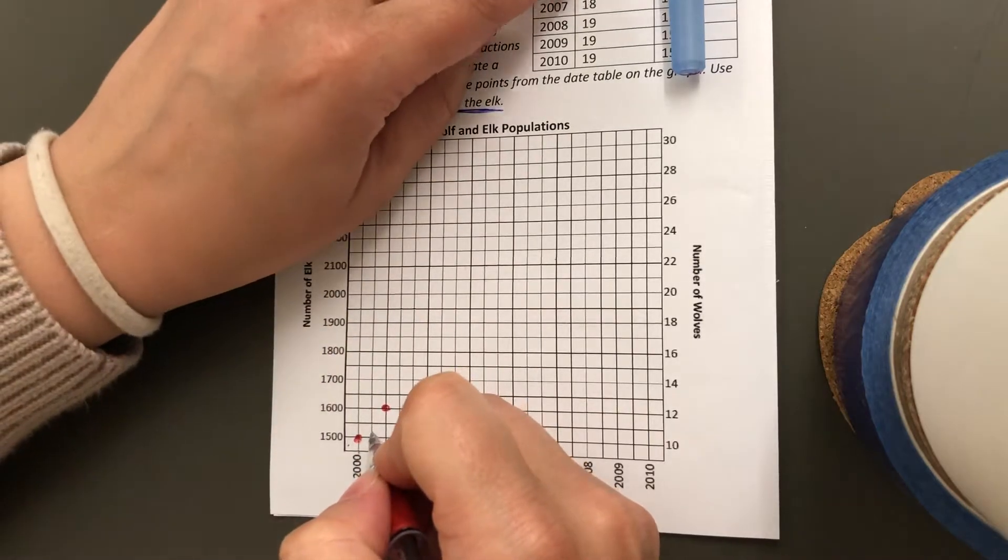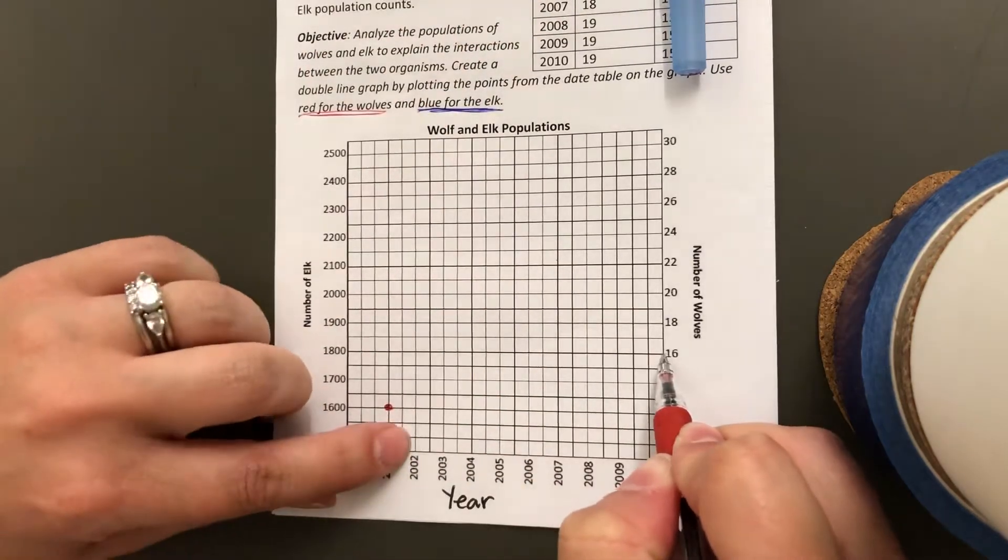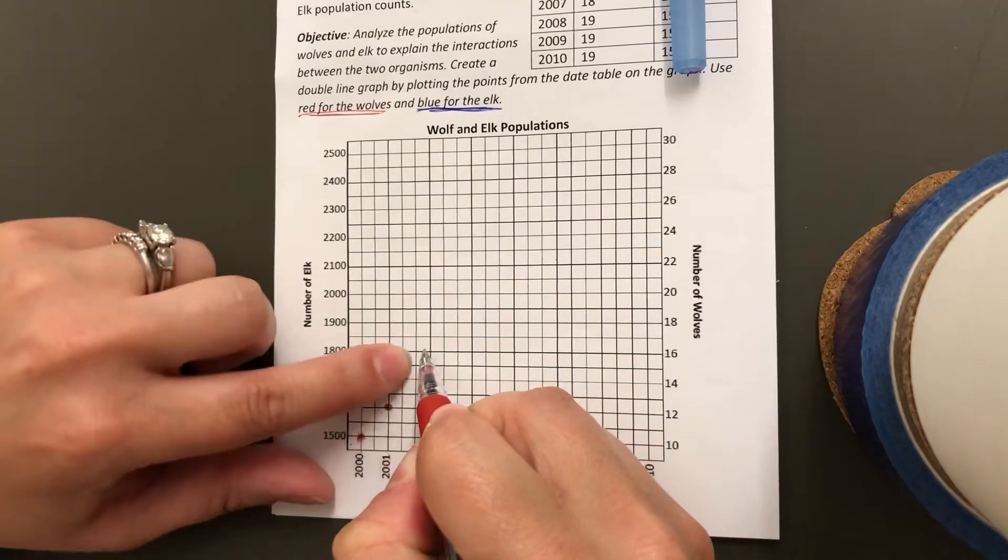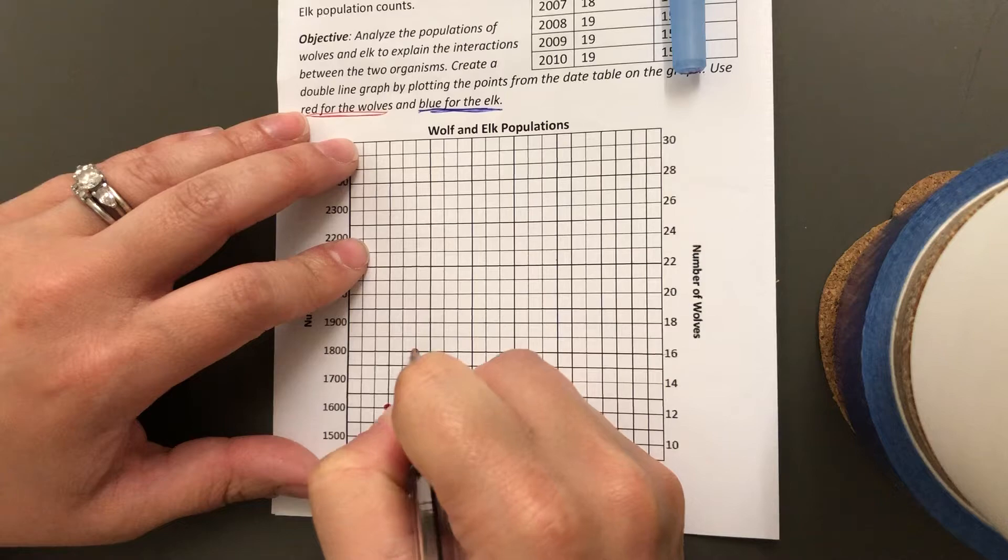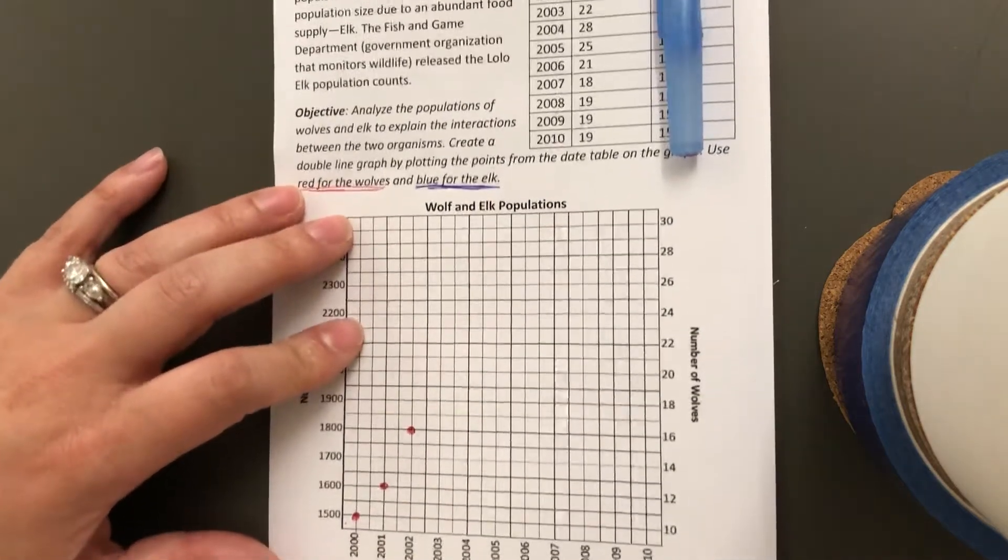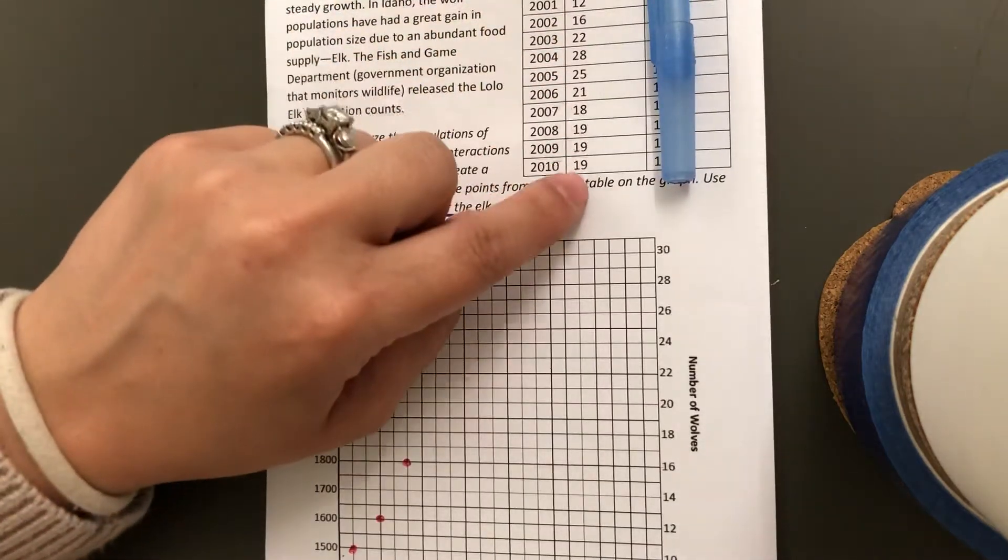Year 2002, it was 16, and I'm going to continue doing that for all of my wolf population points.